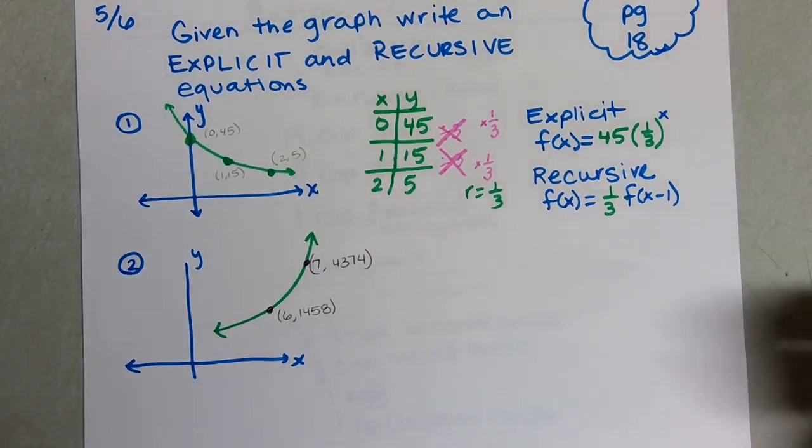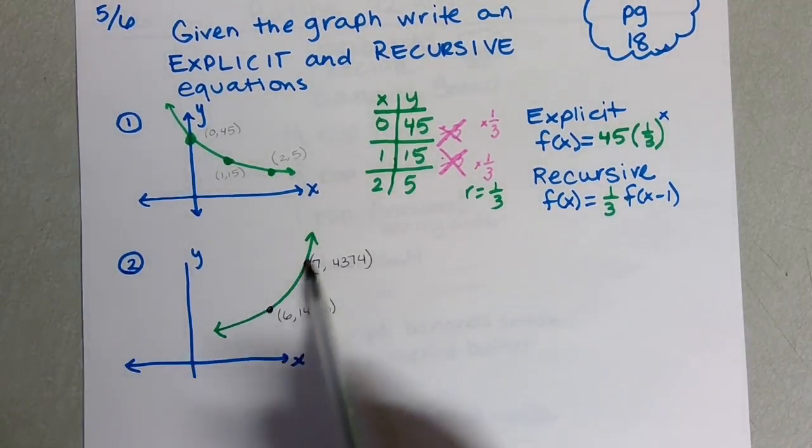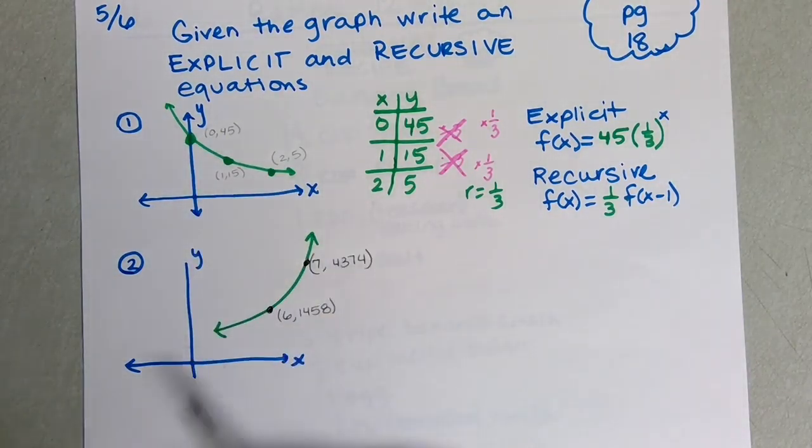Problem number two is actually a little bit more difficult because we have exponential growth, and we can see it's growing based on the graph. We know it's geometric because it's not a straight line.